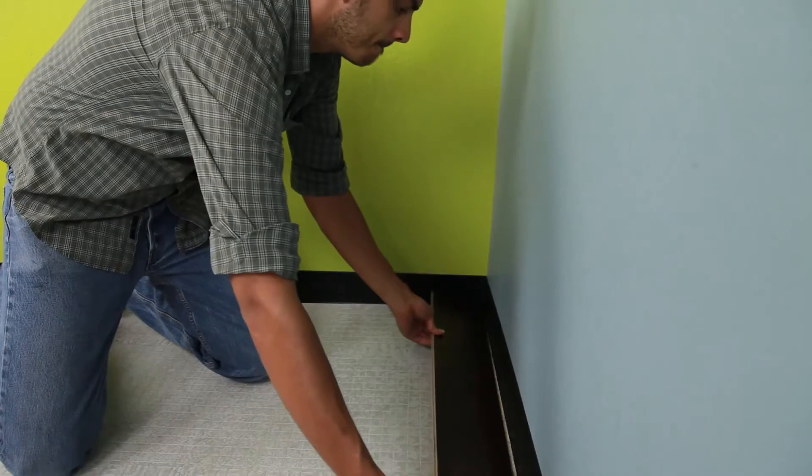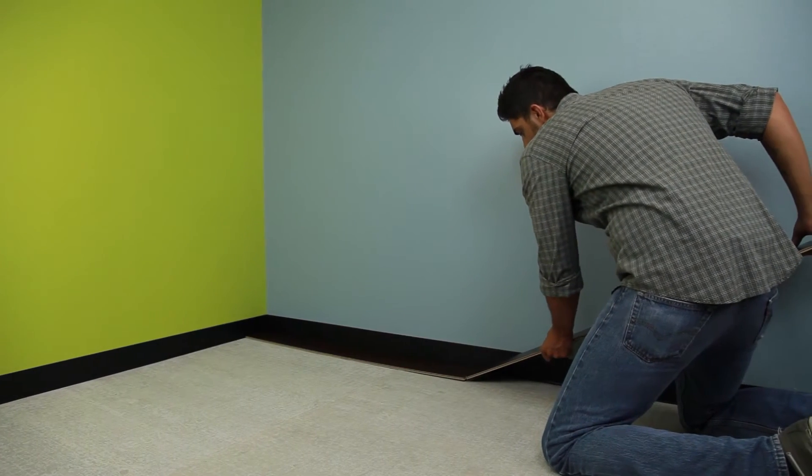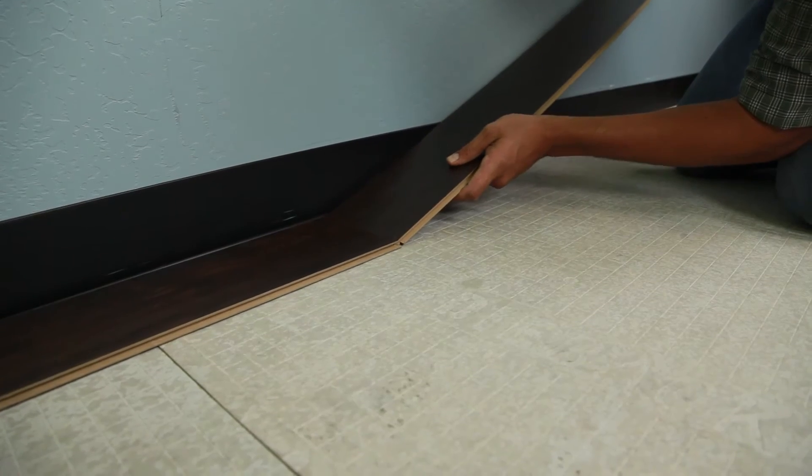To begin your installation, simply start in the corner of the area working from left to right. Complete the first row by interlocking the tongue and groove connectors and aligning the seams.